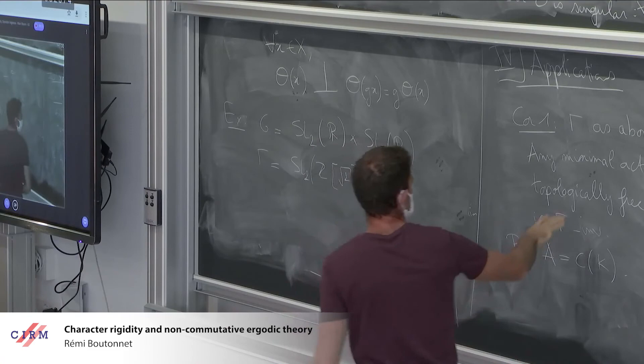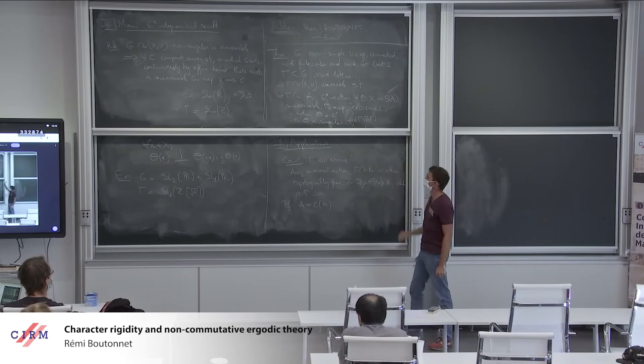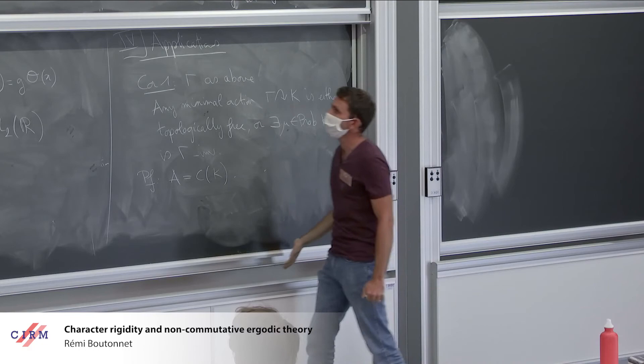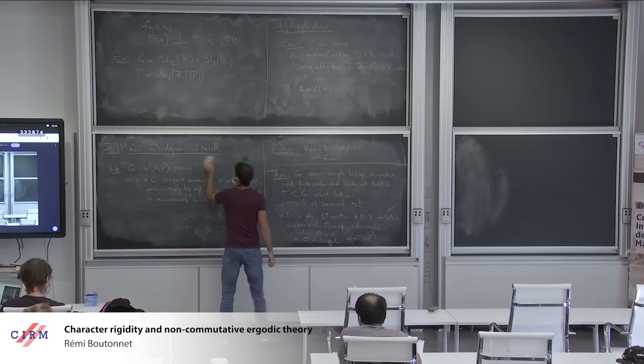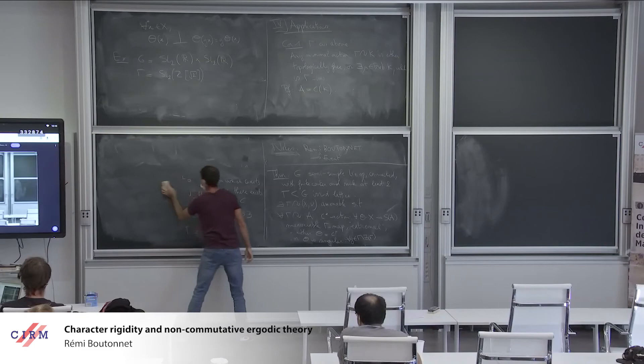If this map is constant, then the essential image is an invariant probability measure. If this map is singular, then the measure θ(x) cannot charge the fixed-point set of G, because it's made singular with respect to itself by G. So for every x, θ(x) doesn't charge the fixed-point set of G, and you deduce very easily that the action is necessarily topologically free.